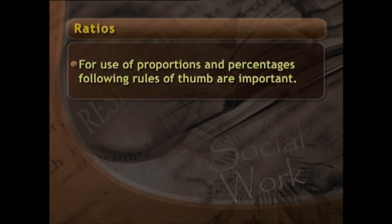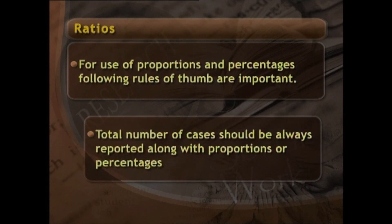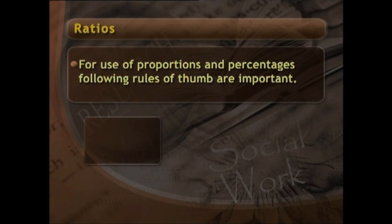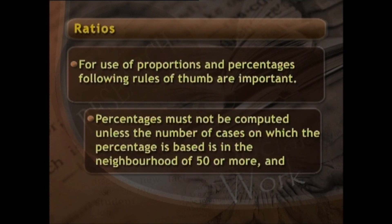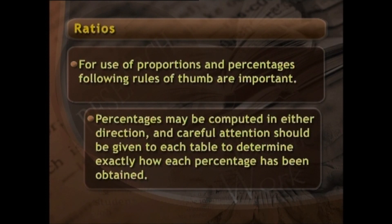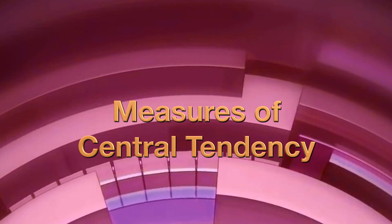For use of proportions and percentages, the following rules of thumb are important: (1) the total number of cases should always be reported along with proportions or percentages; (2) percentages must not be computed unless the number of cases on which the percentage is based is in the neighborhood of 50 or more; and (3) percentages may be computed in either direction, and careful attention should be given to each table to determine exactly how each percentage has been obtained.